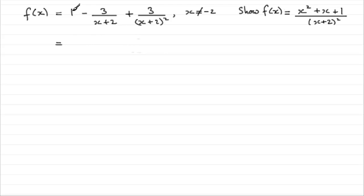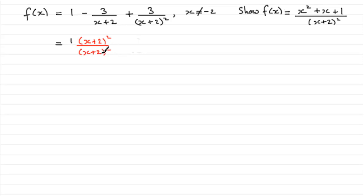We need to take this first term, 1, and in order to make it into a fraction over x plus 2 all squared, we need to times it by x plus 2 all squared over x plus 2 all squared. Timesing top and bottom by the same value is essentially multiplying by 1, so 1 times 1 is still that 1.